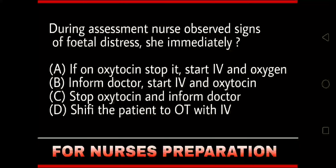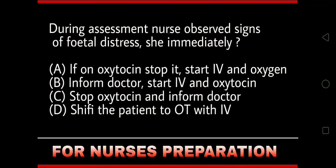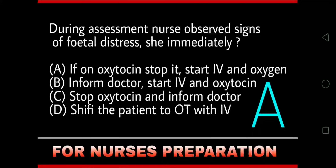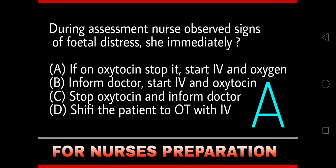During assessment, the nurse observed signs of fetal distress. She immediately — Option A: if on oxytocin, stop it and start IV and oxygen; Option B: informed doctor, start IV and oxytocin; Option C: stop oxytocin and inform doctor; Option D: shift the patient to OT with IV. The right answer is Option A: if on oxytocin, stop it and start IV and oxygen.